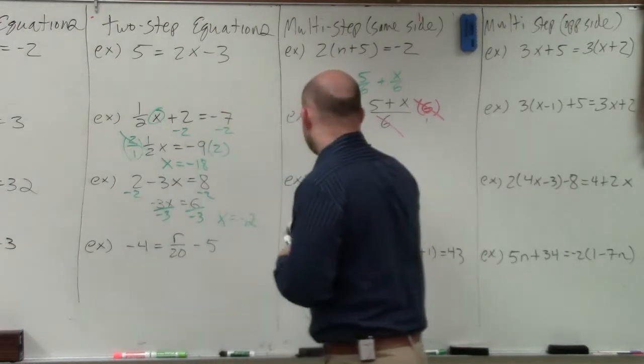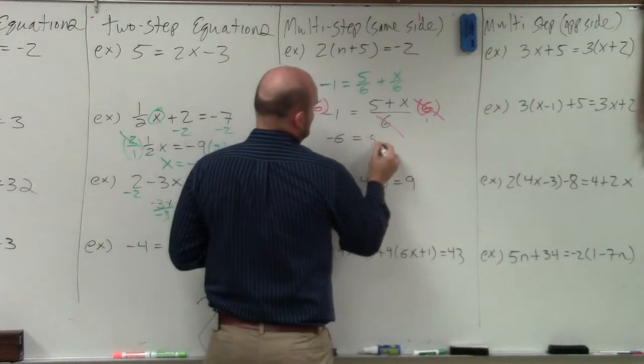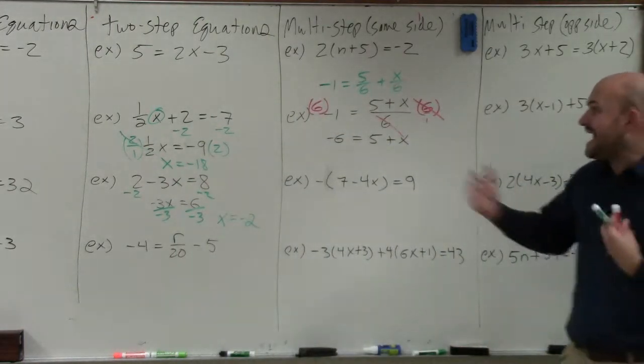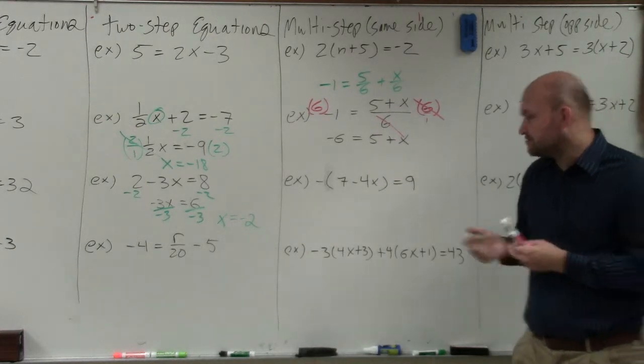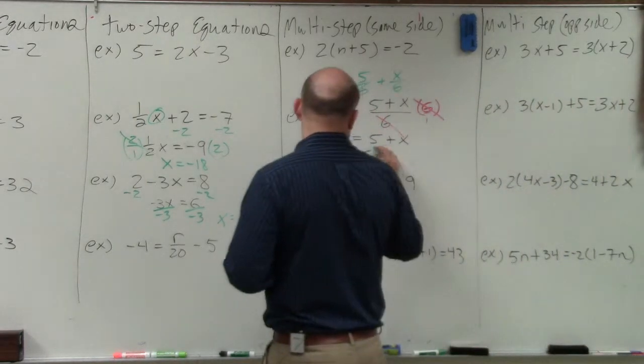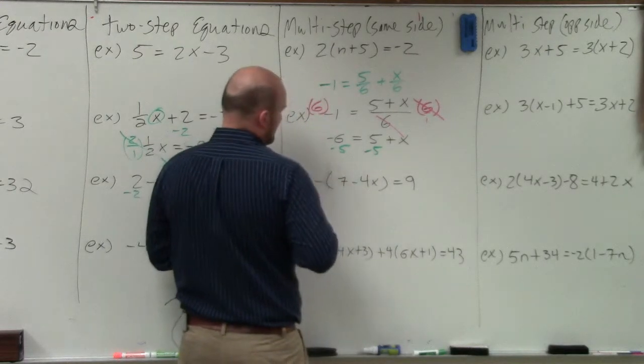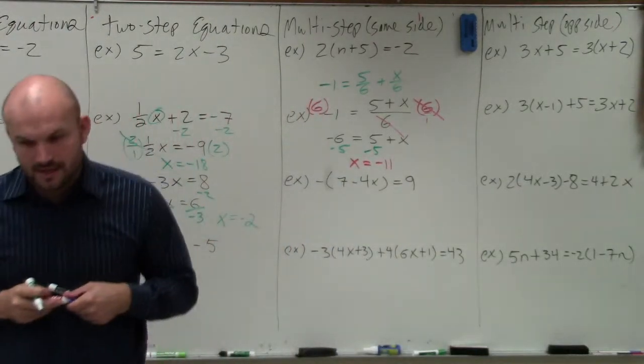So now you're left with negative 6 equals 5 plus x. Now you can see that the x is being added by 5 because that's a positive 5. So then you just subtract 5. Subtract 5 and you obtain x is equal to negative 11. OK?